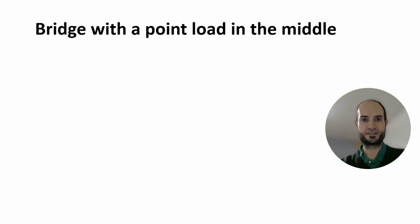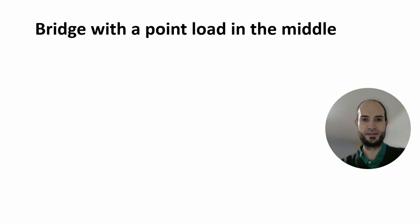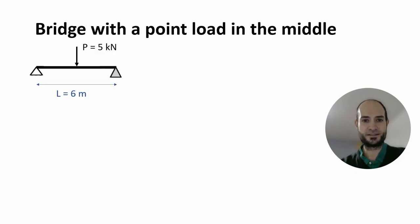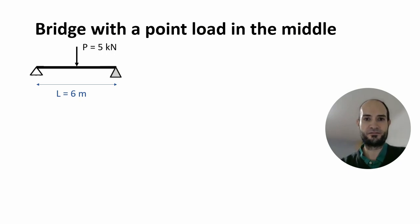The first case is a bridge with a point load in the middle. This is the easiest one, and in this example we have a 6-meter span with a 5 kN point load in the middle.